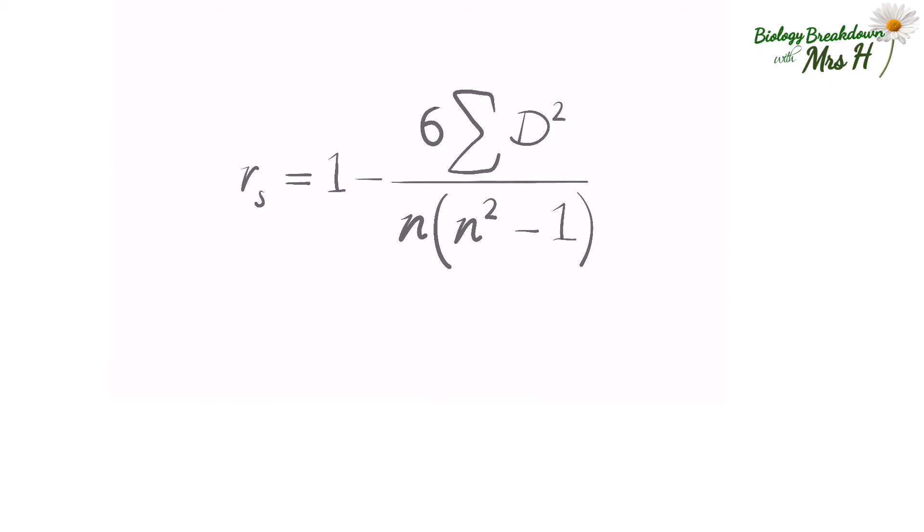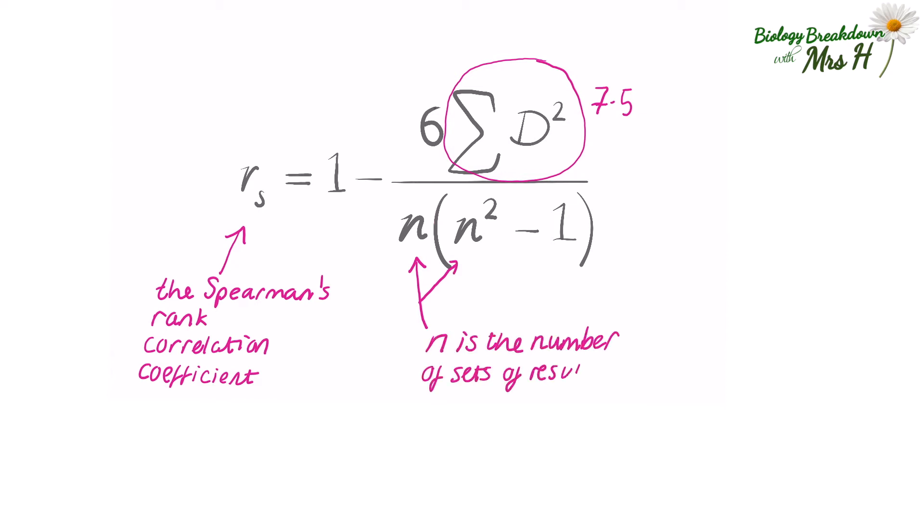Let's look at the formula in a bit more detail. The sum of D squared is the sum of the differences squared, which is 7.5. RS is the Spearman's rank correlation coefficient. This will be our statistical value, and N is the number of sets of results. In this example, N equals 10.